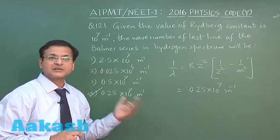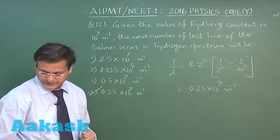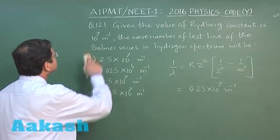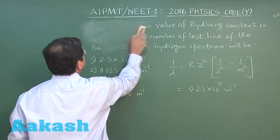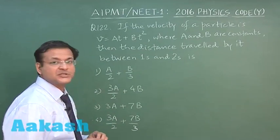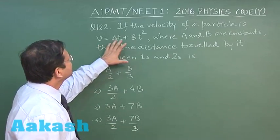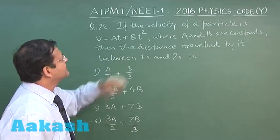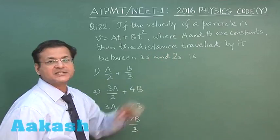Now look at next question, that is question 122. This question 122 is based on the application of calculus. You have been given the velocity of particle as At plus Bt square, and you have to find out the distance travelled.